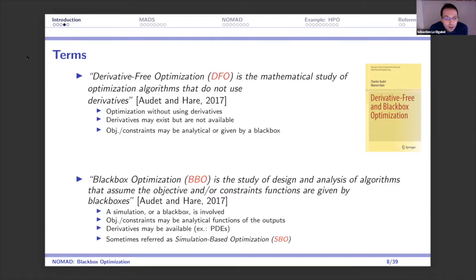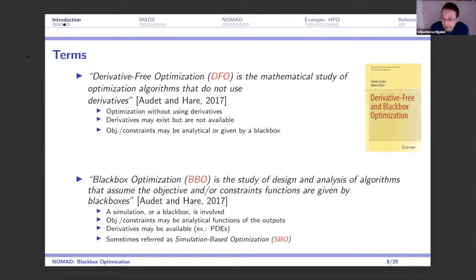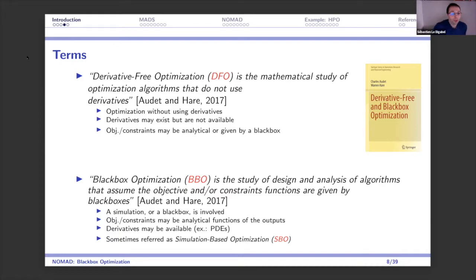Charles Audet and Warren Hare wrote a book in 2017 about this field, covering derivative-free and blackbox optimization. In terms of definitions: derivative-free optimization is when you don't have access to derivatives that may nevertheless exist. Blackbox optimization is when derivatives typically do not exist — you're not even going to be able to approximate them with finite differences. That's the difference between the two, though they are very close.